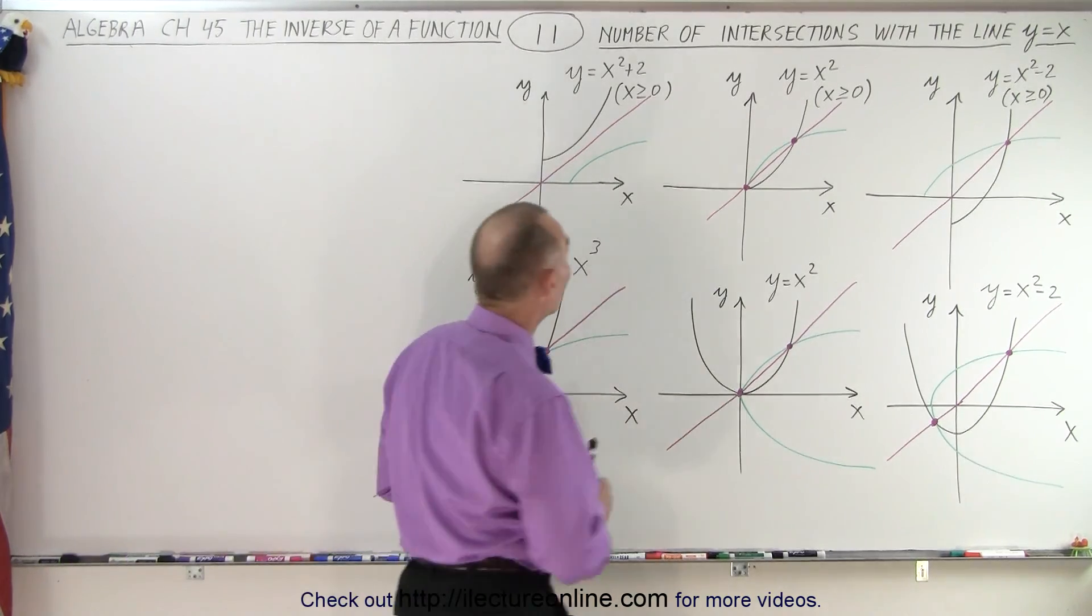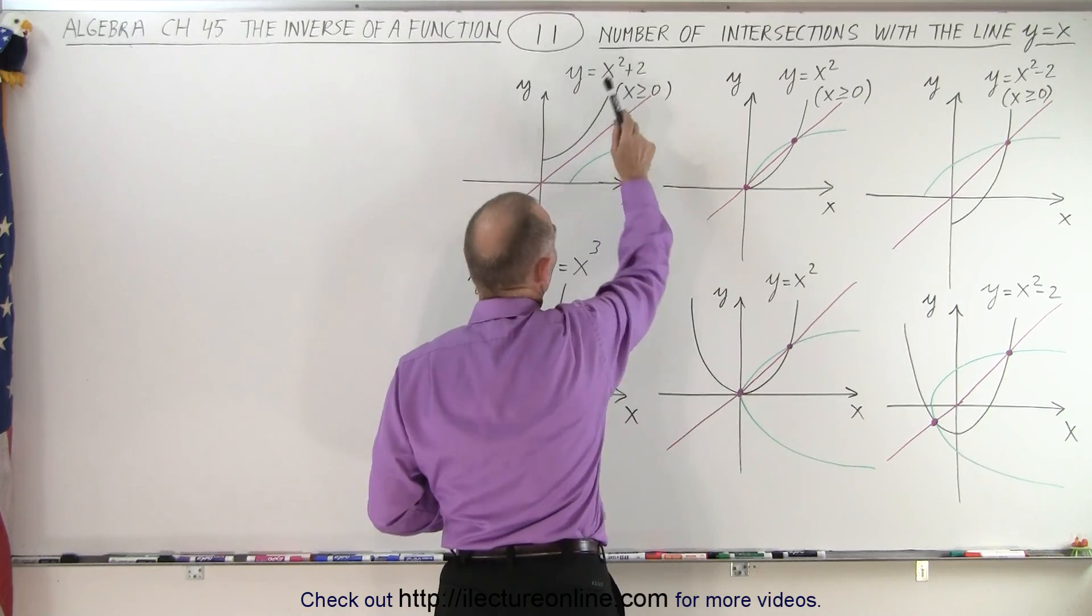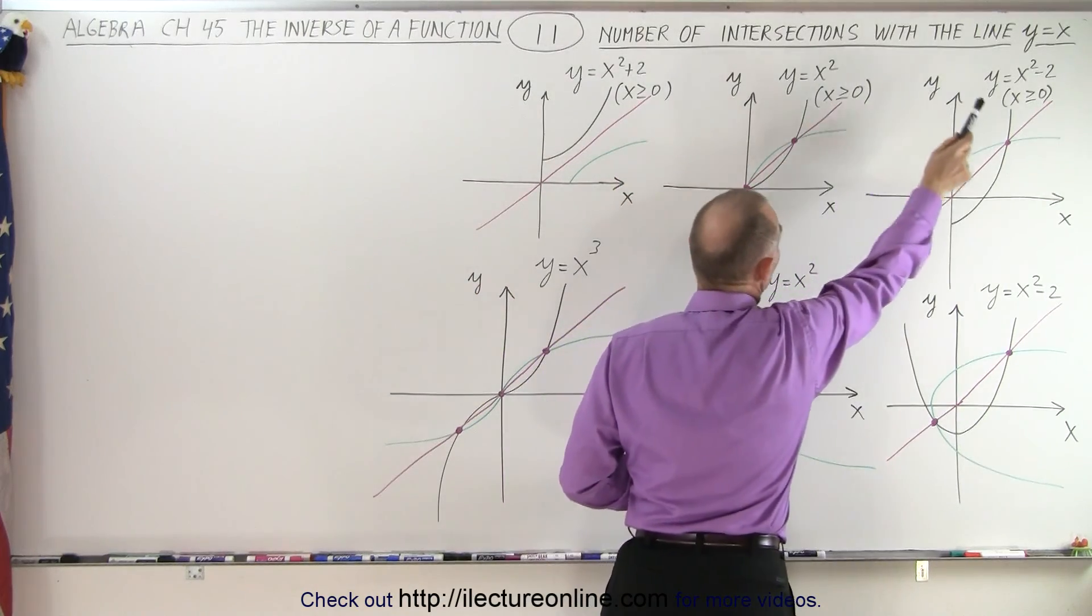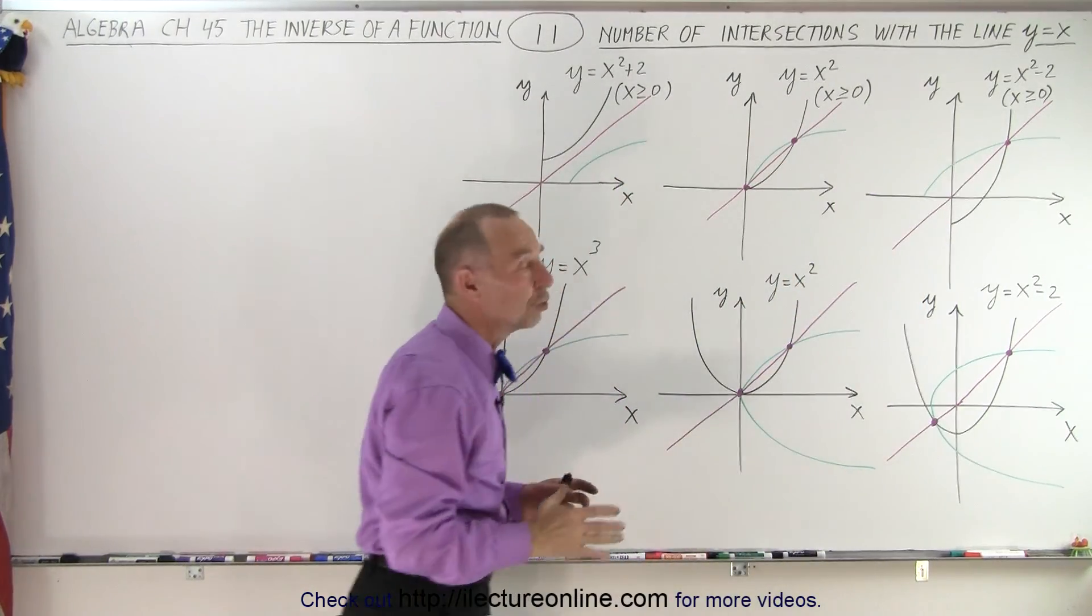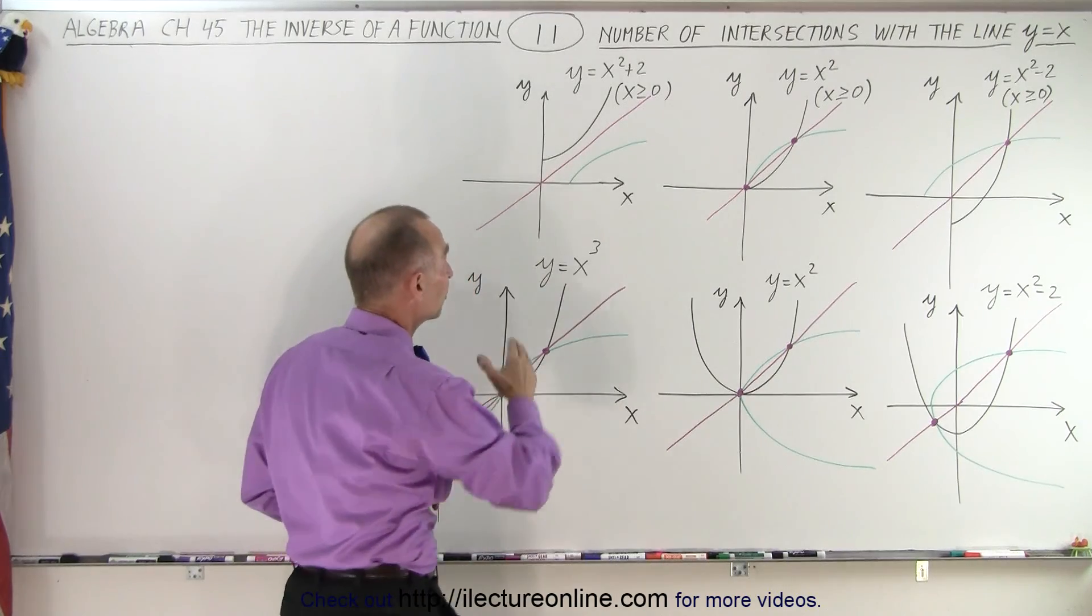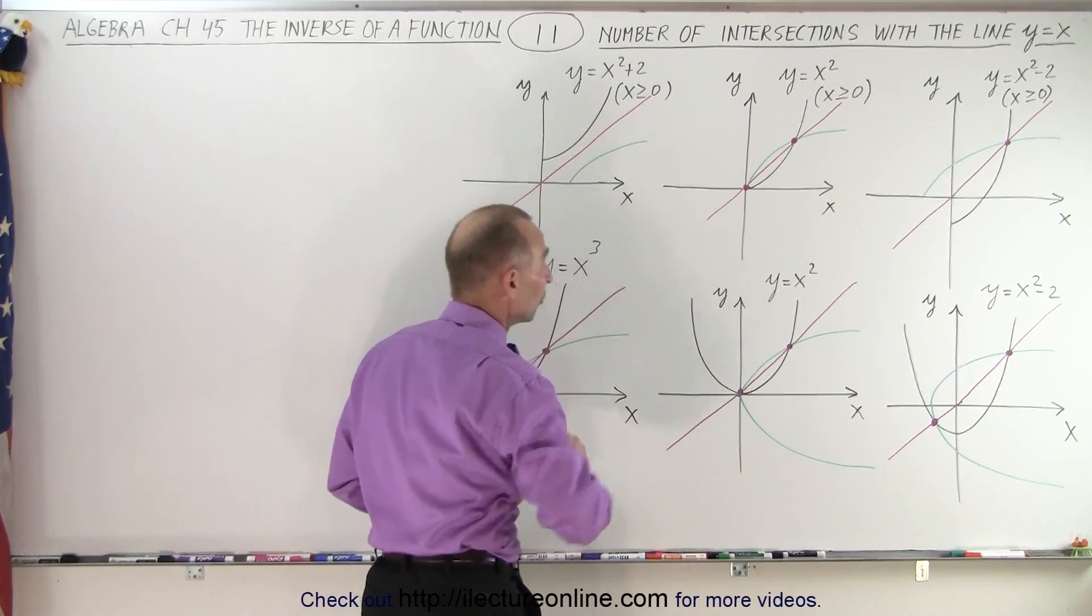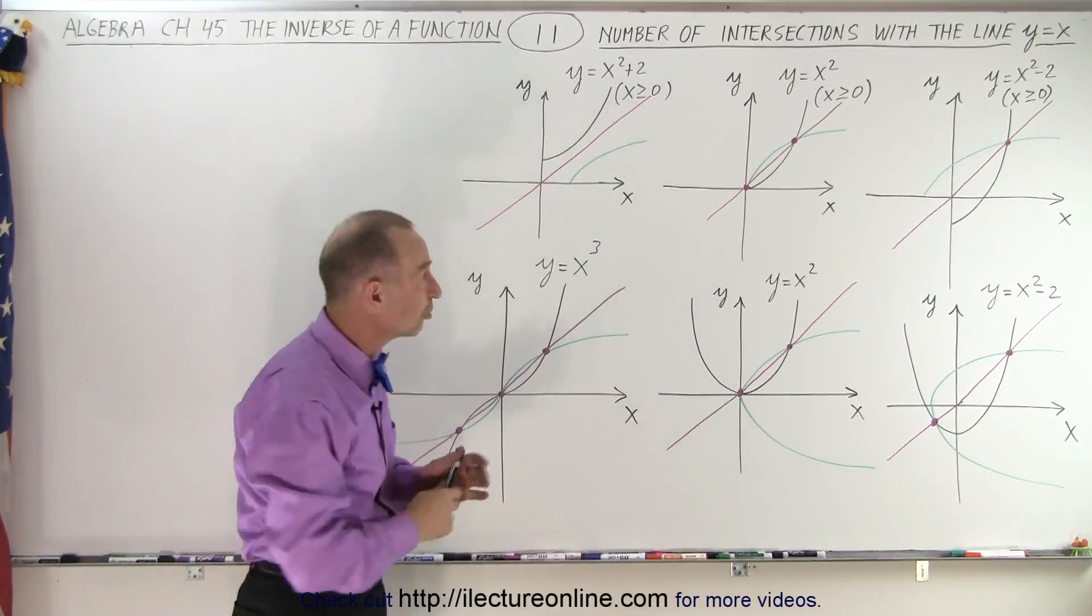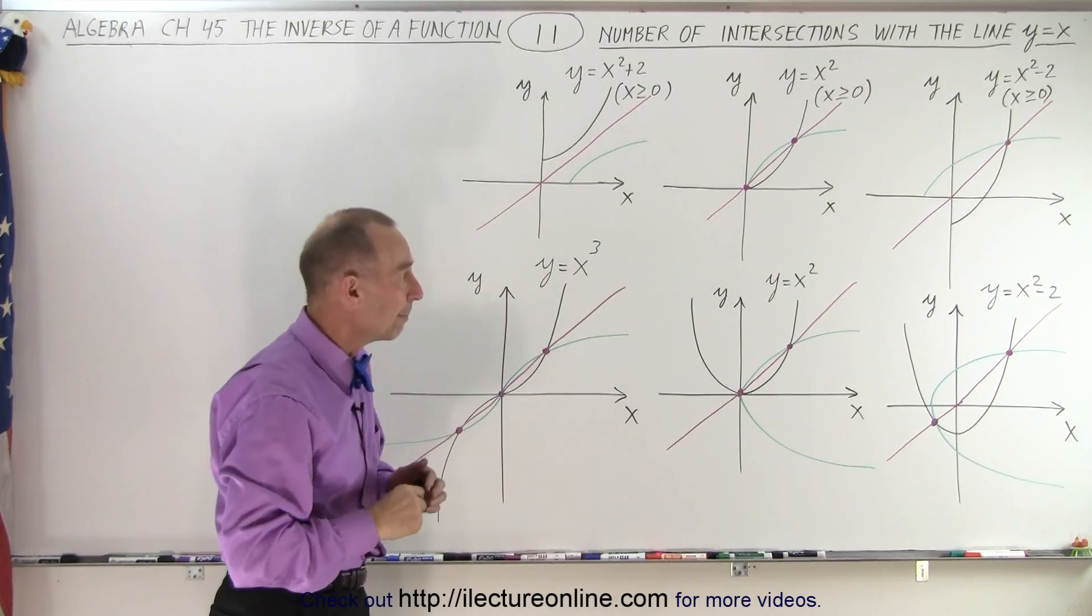Notice that at the top we have y equals x squared plus 2, y equals x squared, and y equals x squared minus 2, but the condition there is that x must be greater than or equal to 0, which means that we have a one-to-one function in each of the cases at the top.